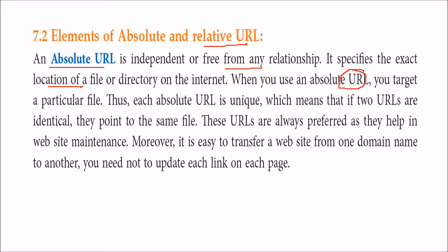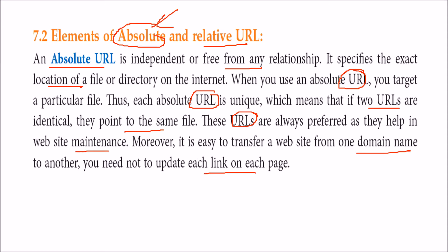When you are using an absolute URL, you are actually targeting a single particular file. Each absolute URL is unique — that means if you have two URLs that are unique, they are actually pointing to the same file. Absolute URLs are always preferred because they make the maintenance of your website quite easy. If you are transferring the website from one domain name to another, the absolute URL will always be good — you need not update each link on each page.